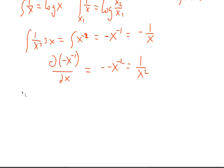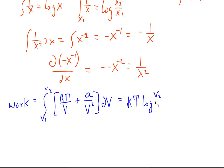So based on the review, we can now write down the integral that we want. So we're going to have work is equal to this integral, V1 to V2, RT over V plus A over V squared, dV. And that, finally, is going to be equal to RT times the log of V2 over V1, plus A over V1 minus A over V2.